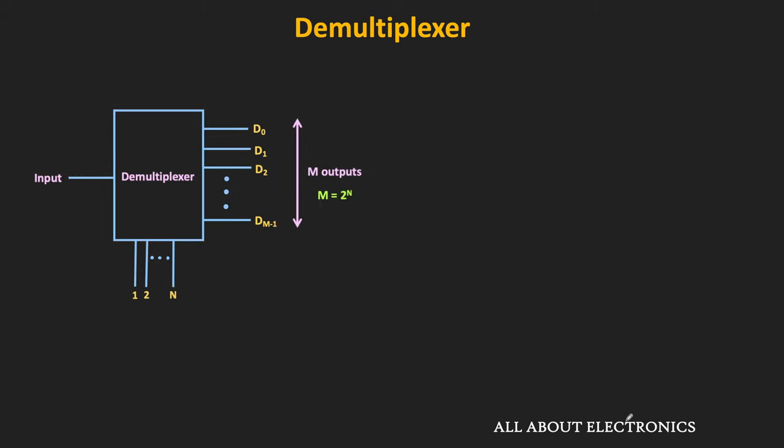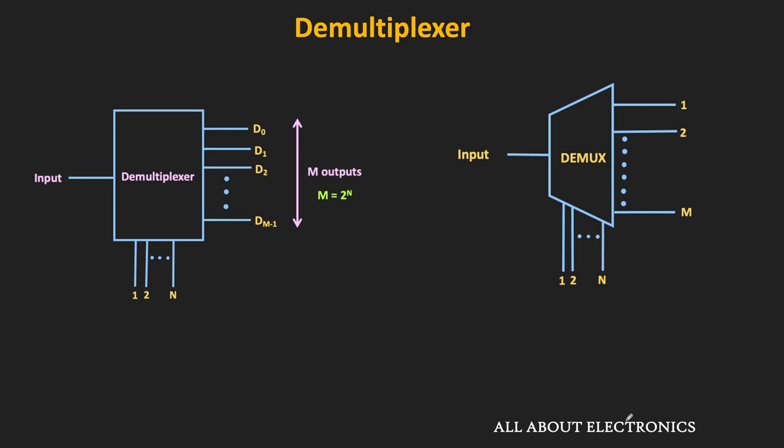Symbolically, the demultiplexer is represented by a standard symbol, and in abbreviated form it is often called a demux. If a demultiplexer has 1 input and m outputs, it is typically referred to as a 1×m demux, where 1 represents the input and m represents the output.